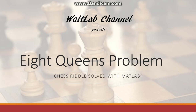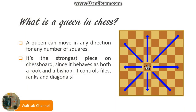Without further ado, let's get into it. For those of you who are not familiar with chess, what is a queen? Well, the queen is the strongest piece on the chessboard. It can control files, ranks, and diagonals, as you can see in the picture on the right hand side of the slide.